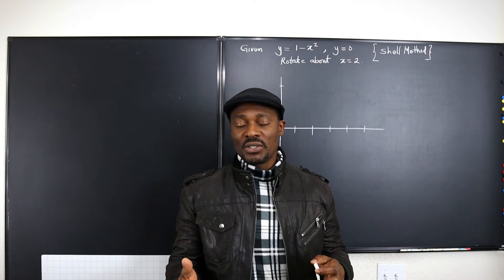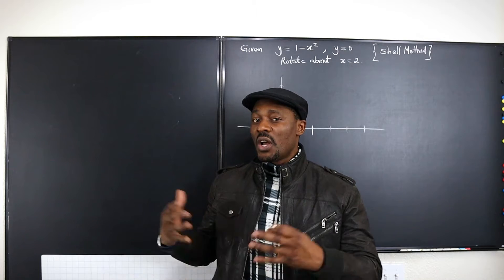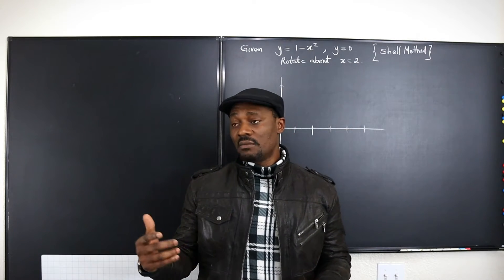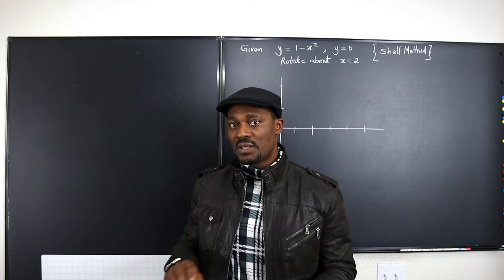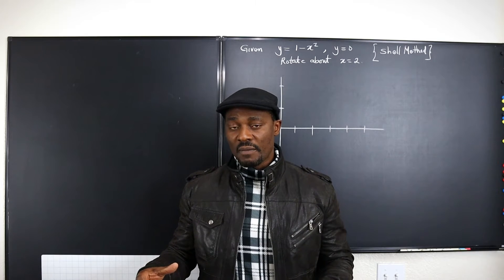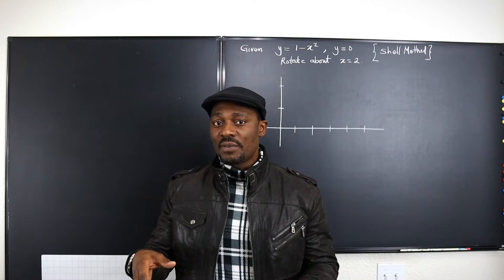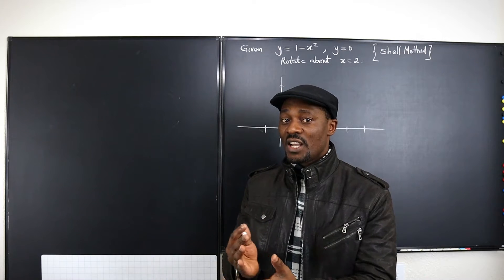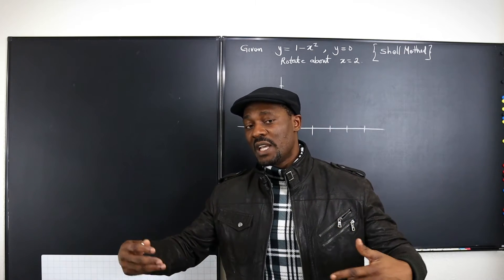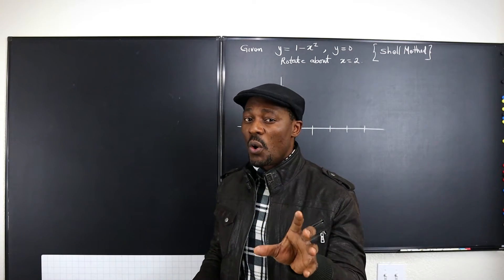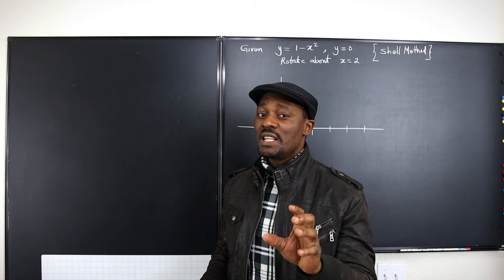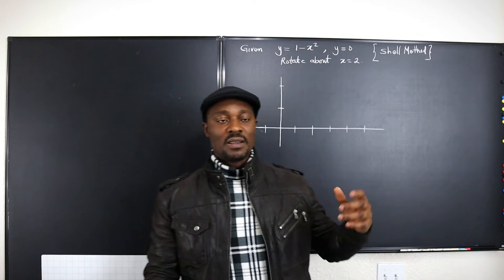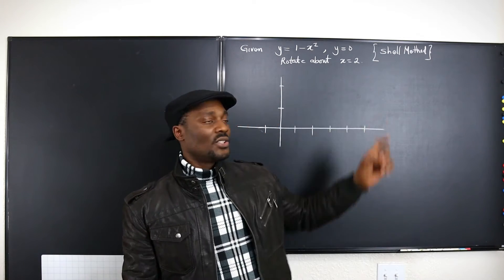If that happens, you will get a solid that you can find the volume of by using the disk method, because there is no hole and there is no gap. But whenever the region you're rotating is not attached to the line about which you're rotating, there will always be a gap — there's a hole — and that will lead to you getting a solid that requires the washer method or the shell method.